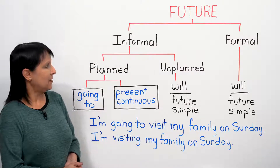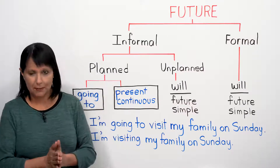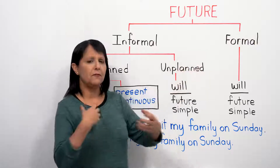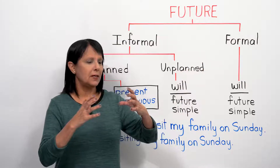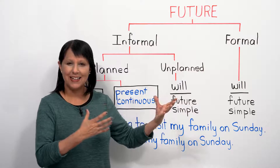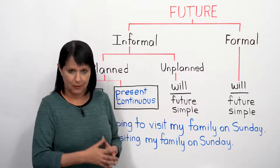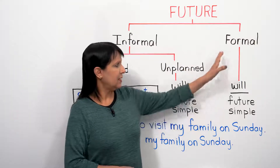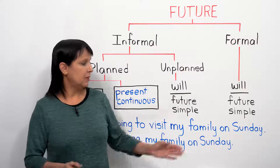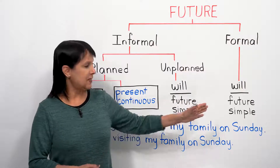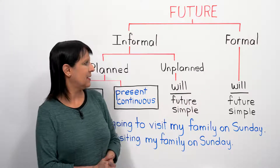When we're talking about the future, you can think about it in a few different ways. The first is: is this a formal situation or an informal situation? Formal means more official, maybe more business-like, with people you don't know very well. In a formal situation, to talk about the future in English, we use the word 'will,' which is the future simple tense. There is a separate class just on that.